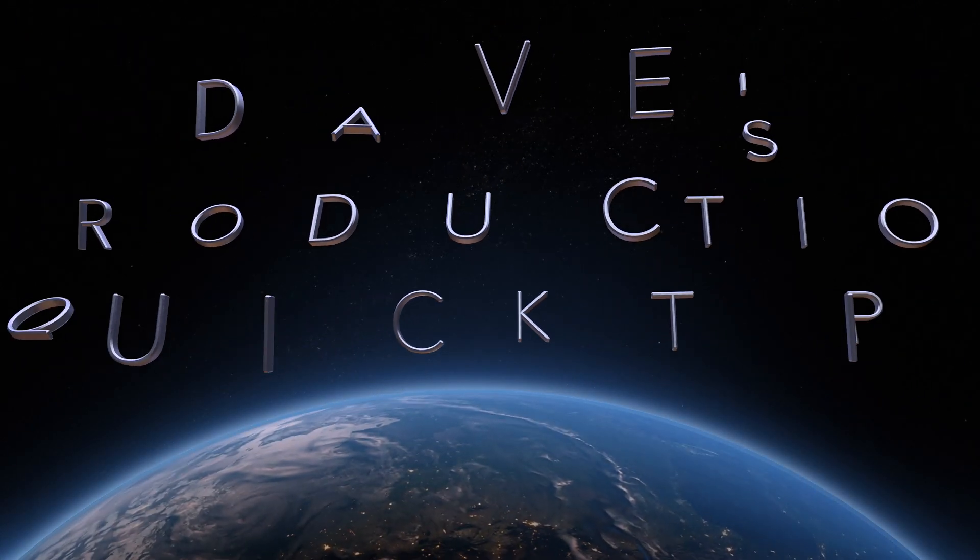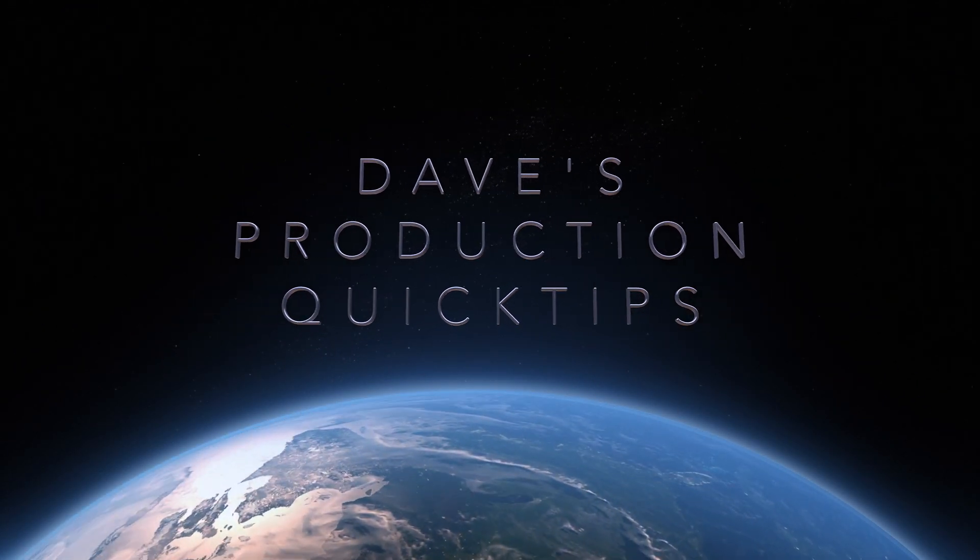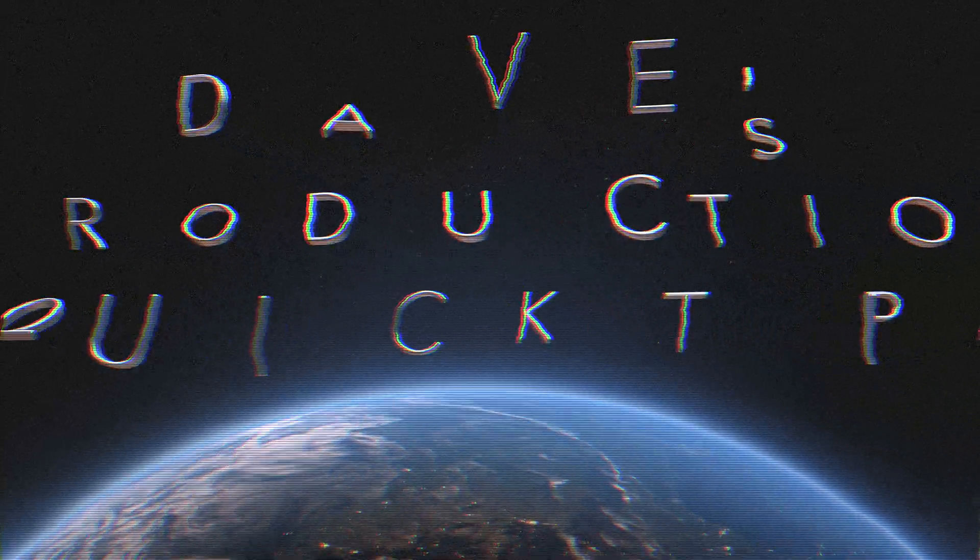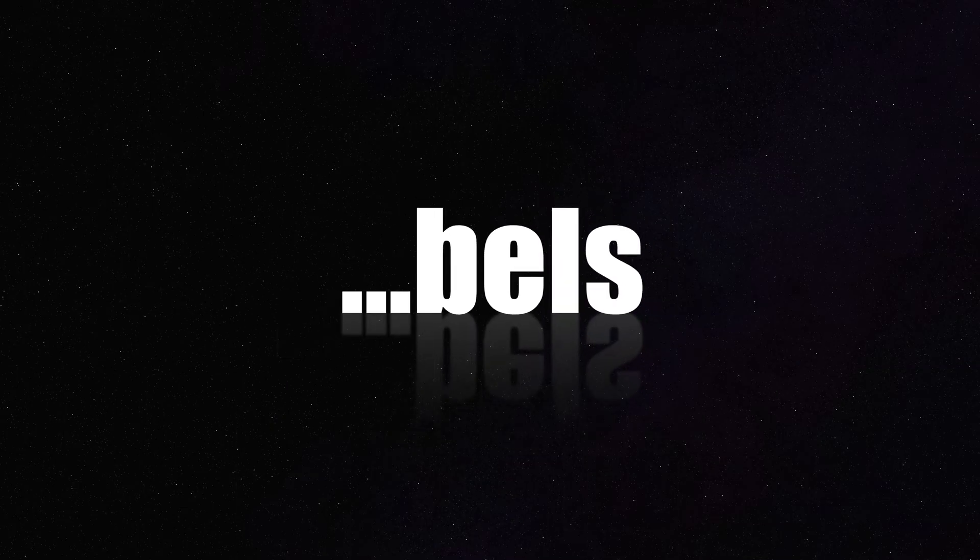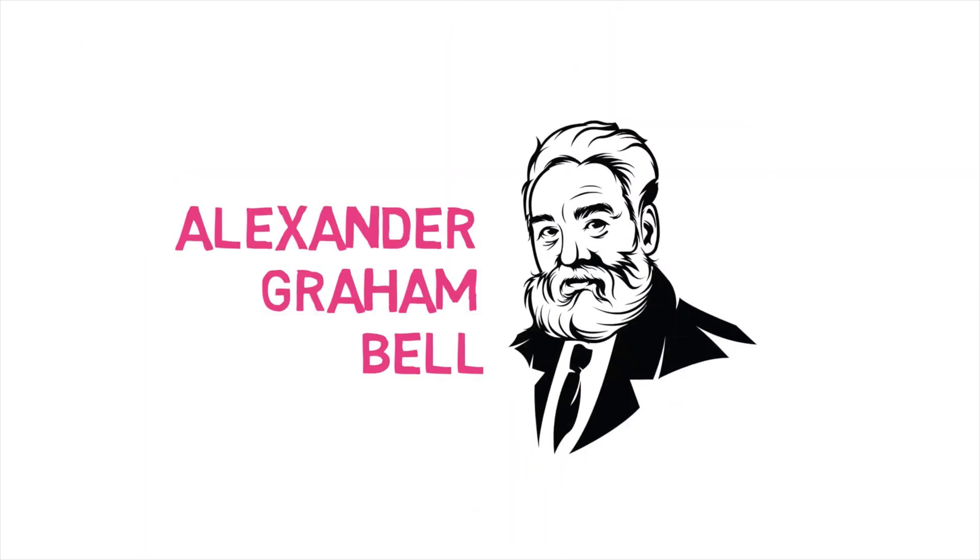It's time for Dave's Production Quick Tips. So, where do we get the word decibel from? Deci, as in one tenth. Bell, as in Alexander Graham Bell, the inventor of the telephone. Put them together and we see that a decibel is one tenth of a bell.